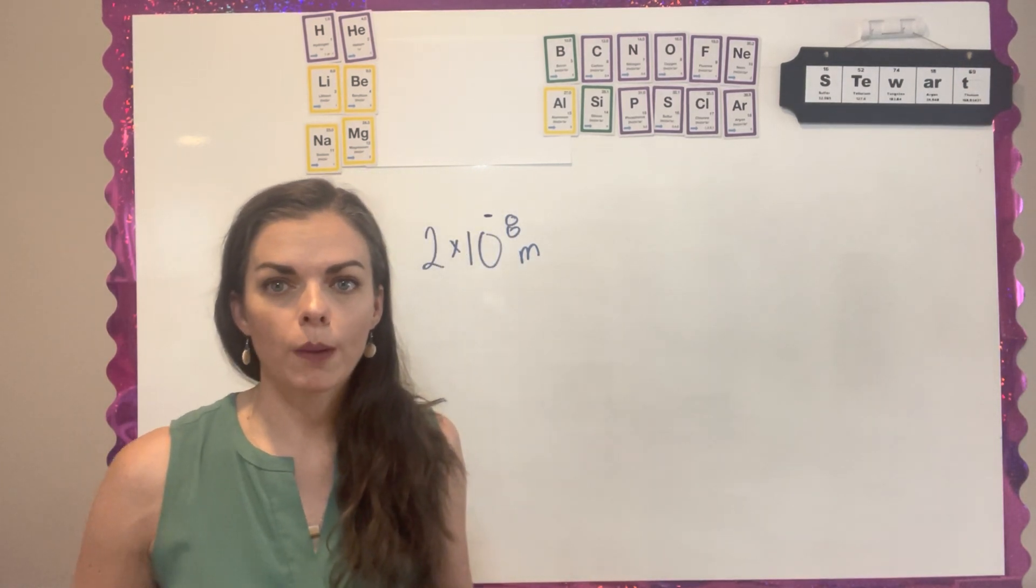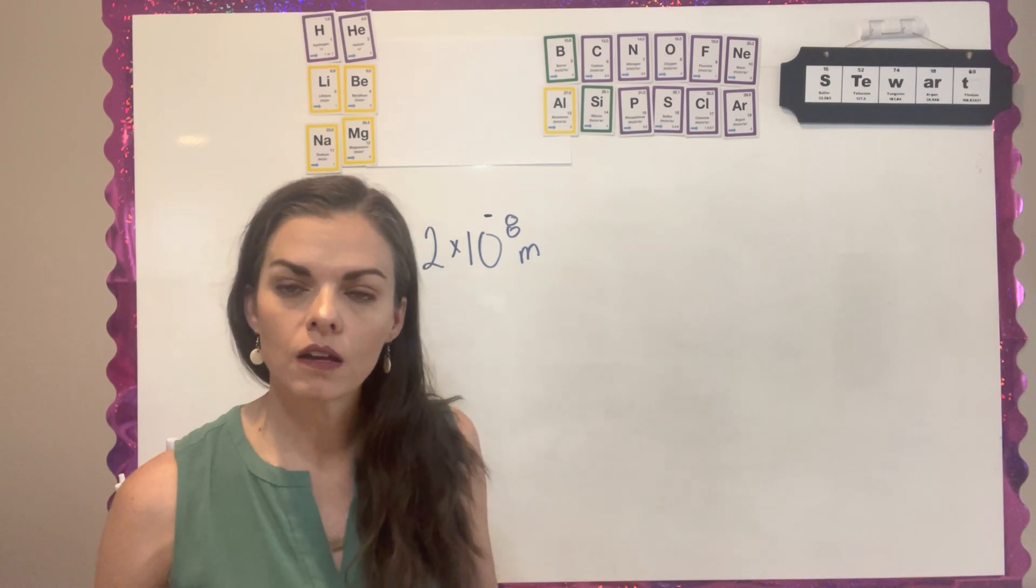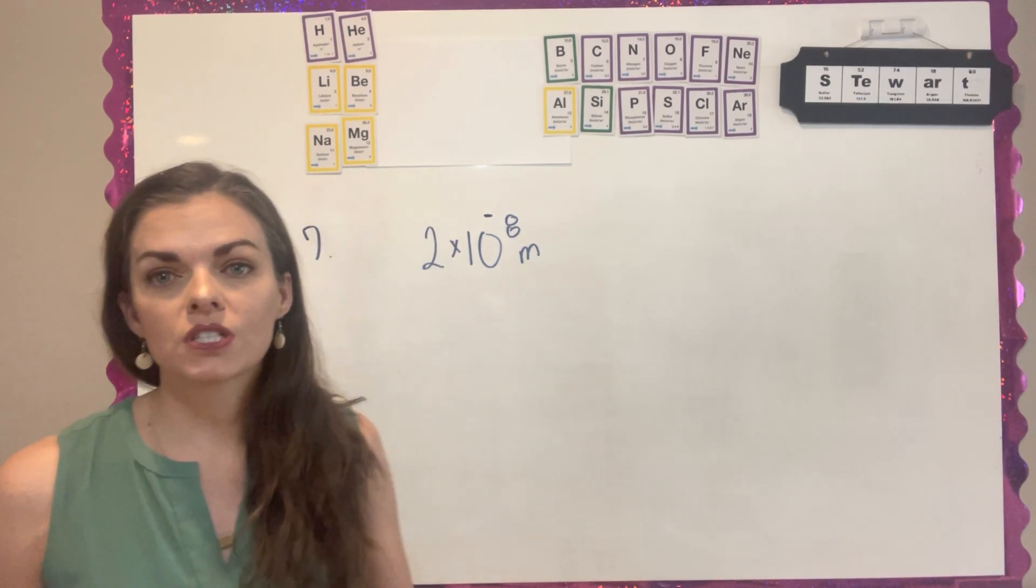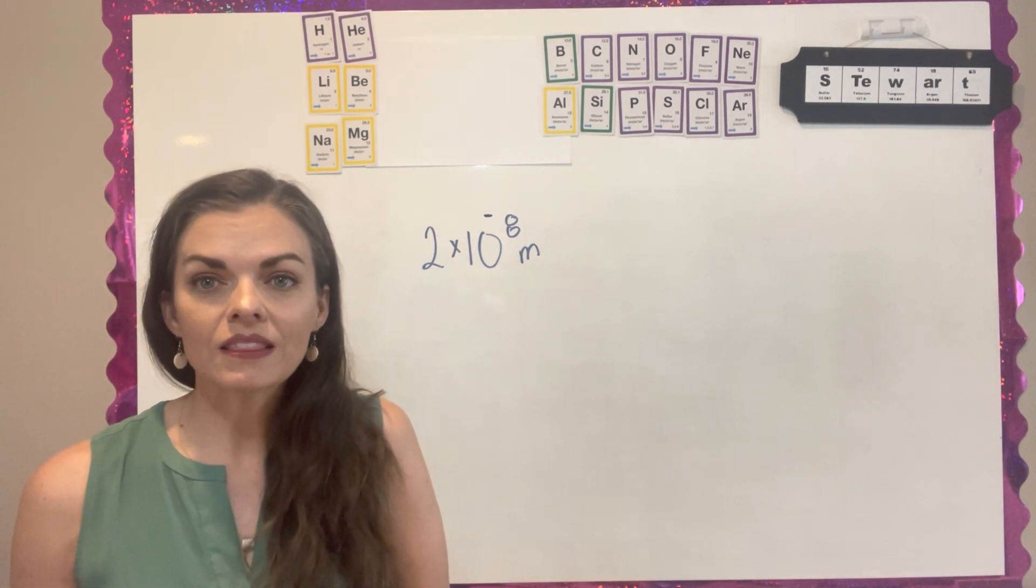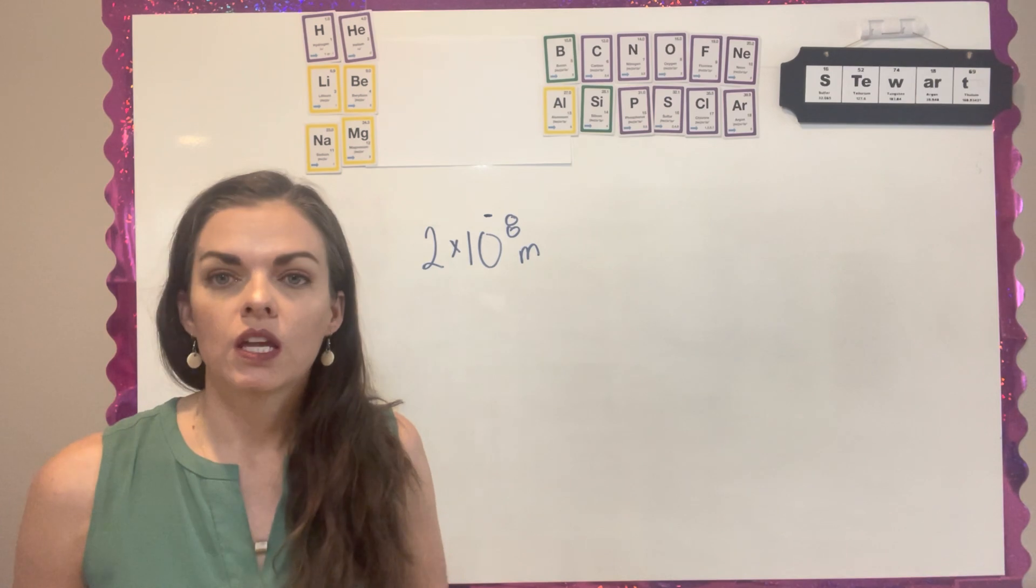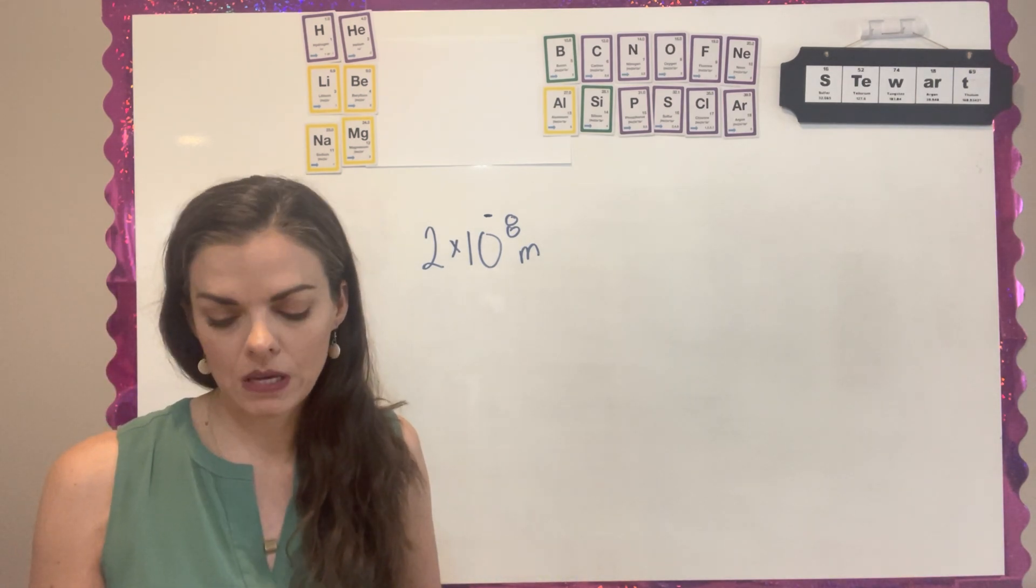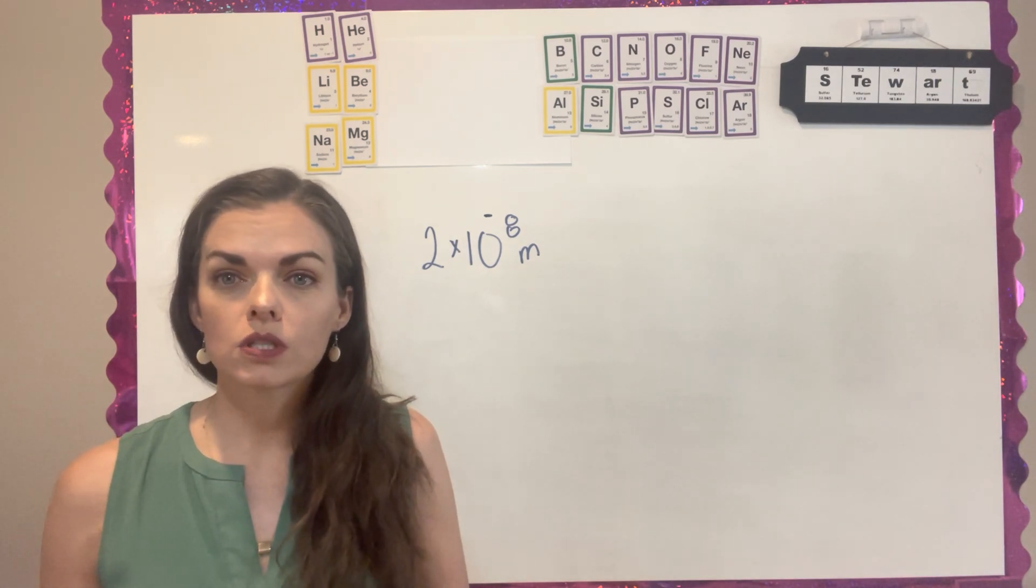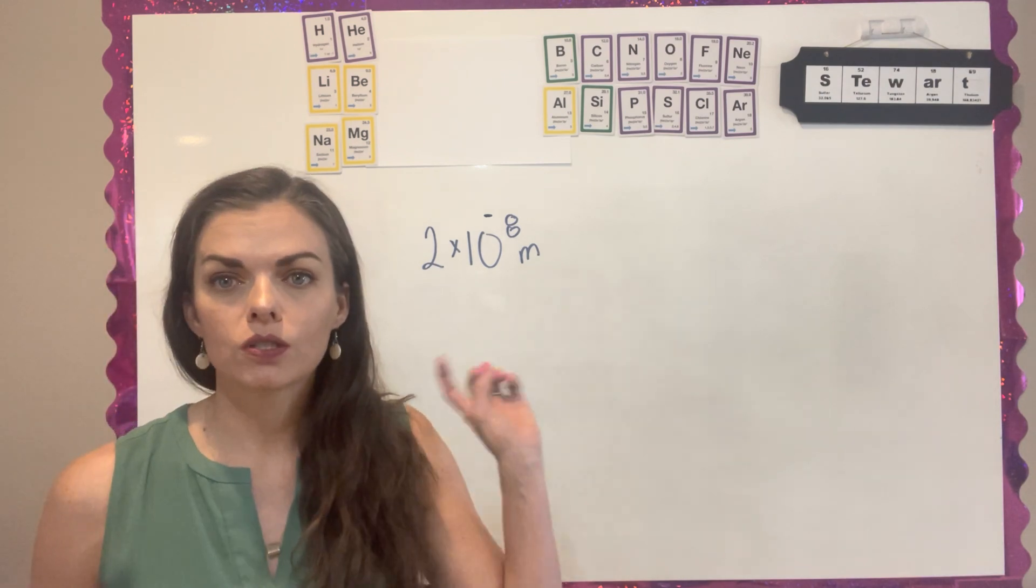Welcome back to the second part of the Chapter 3 Comprehension Check. If you'll remember, we left off talking about light, frequency, and wavelength. For question number 7, it's going to be the first one we start here. It tells you that electromagnetic waves with a wavelength of 2 times 10 to the negative 8 meters are detected.